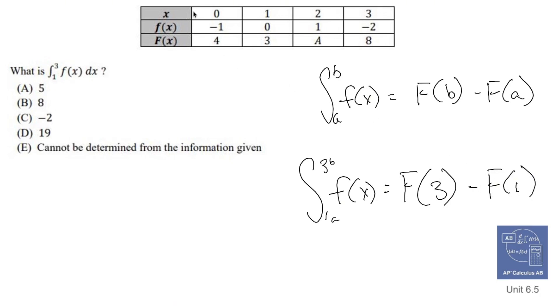So let's see if I have that information. 1 goes to 3 and 3 goes to 8. So this becomes 8, F(3) is 8, minus F(1) is 3. And 8 minus 3 is 5.